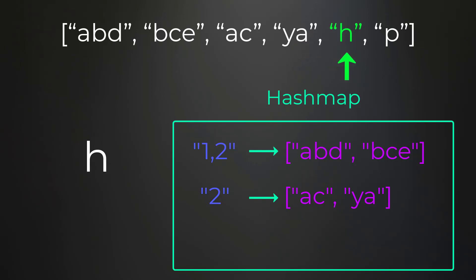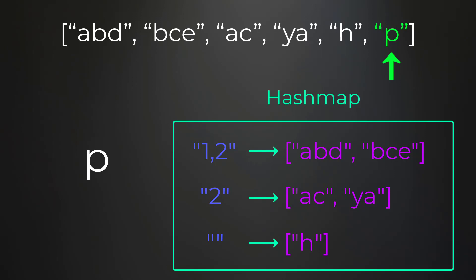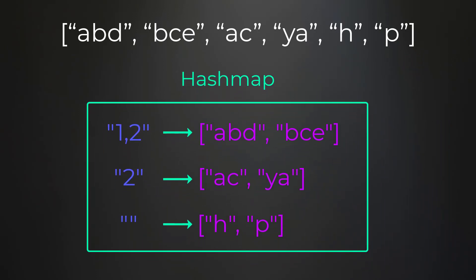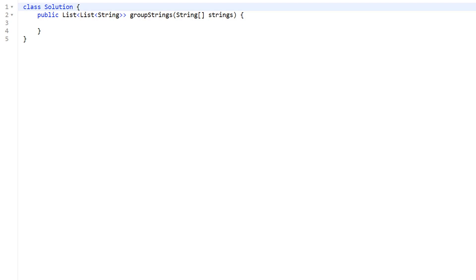Next we have the string h. This shifting sequence is just an empty string since it's a single character on its own, so we create a new list with the string h. Finally, p is also a single character, so the shifting sequence is an empty string and we add p to that list. By the end of iterating over all the strings, we have our final grouped output.